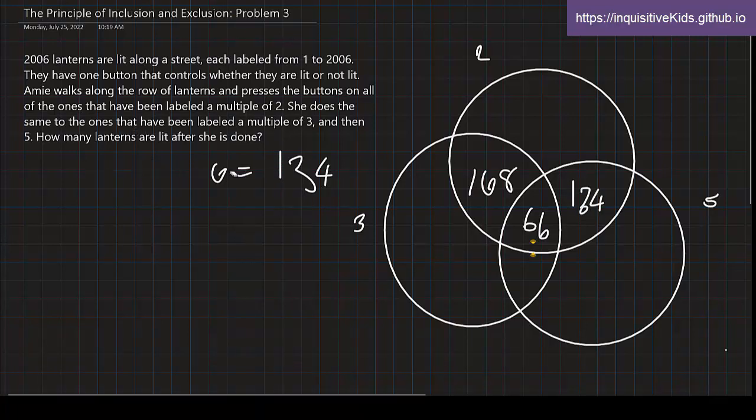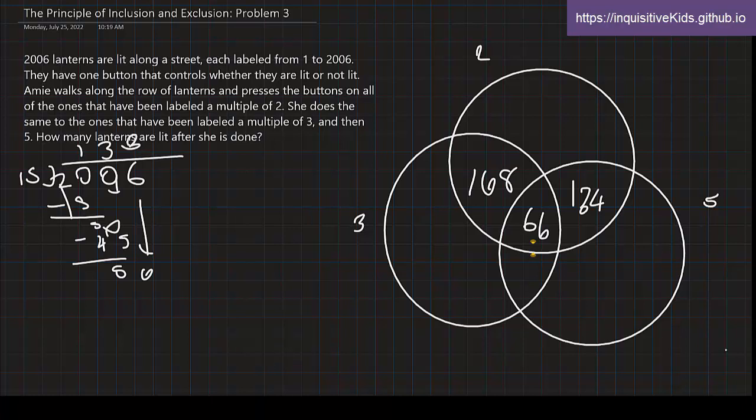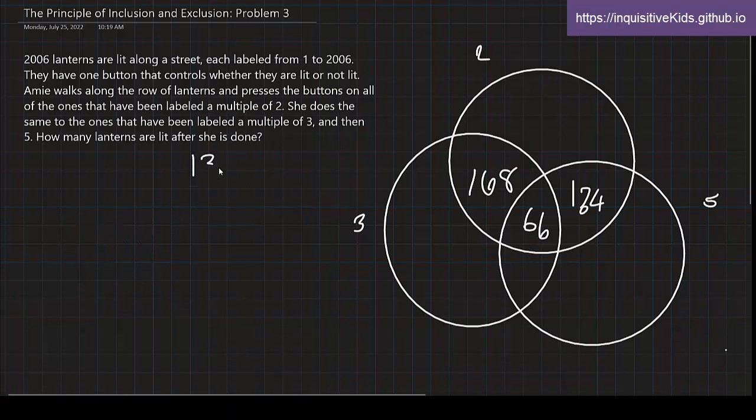Now we have to do the LCM of 3 and 5, which is 15. 2006 divided by 15: 15 goes into 20 once, subtract to get 5, bring down the 0 to get 50, 15 goes in 3 times, that's 45, subtract to get 5, bring this down, and still 3. So 133. 133, but from 133, we have to subtract 66. 133 subtract 66, that gives us 67. So over here, this area is 67.